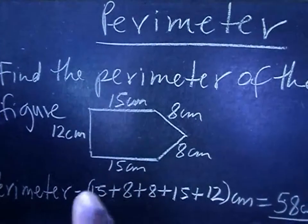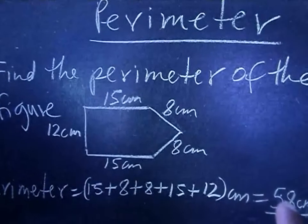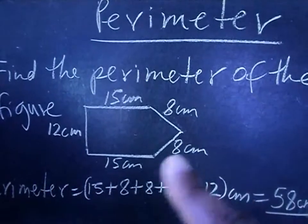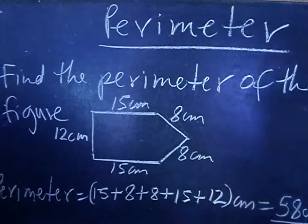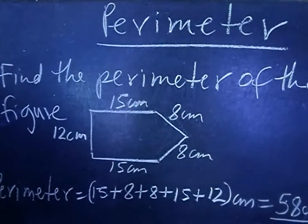When you add up all of that, I got 58 centimeters. The units in centimeters, so your answer is 58 centimeters. So the perimeter is the distance all around a figure.